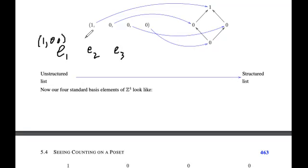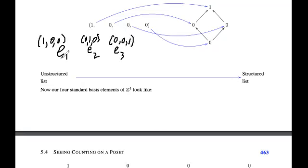So E1 is like (1, 0, 0), E2 is like (0, 1, 0), and E3 is like (0, 0, 1). Of course, we could have four elements and four-tuples as well. But that's kind of what we have there.